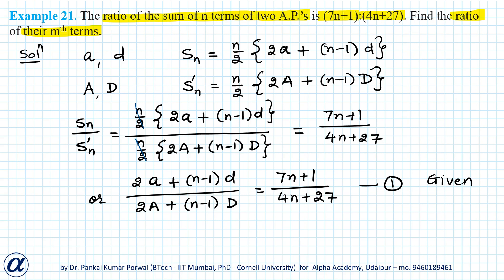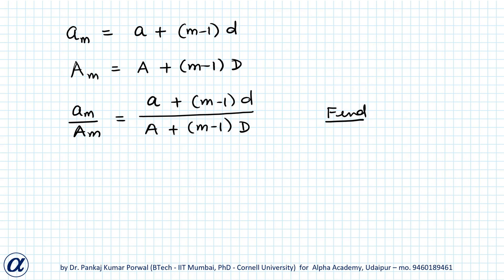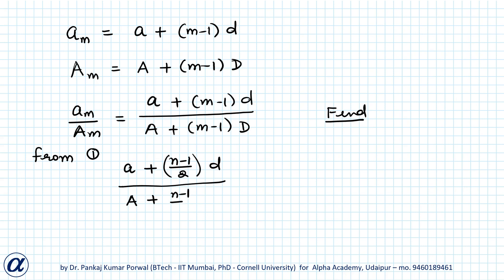Now, looking at what we are given in equation 1, I can simplify by dividing the numerator and denominator on the left side by 2. From equation 1, I get (a + (n-1)/2 · d) divided by (A + (n-1)/2 · D) equals (7n + 1) divided by (4n + 27). Let me call this equation 2.